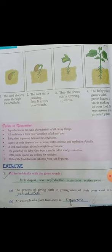B. An example of a plant from stem is, aisa plant which stem se reproduce hota hai, is called sugar cane.